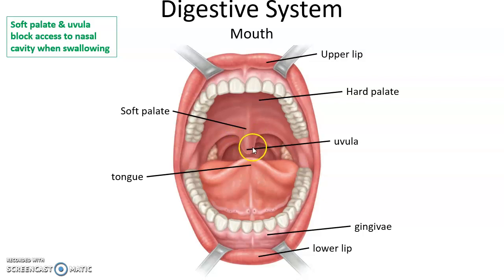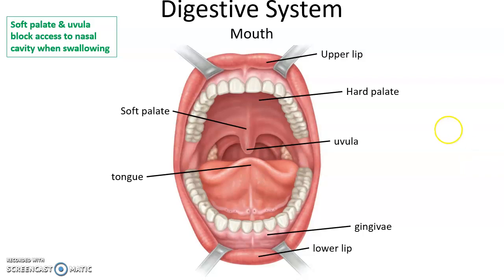There's that little dangly bit in the back of the throat called the uvula. The soft palate and the uvula are important because when we swallow, they help to block the passage to the nasal cavity, preventing food and drink from going up into the nasal cavity.